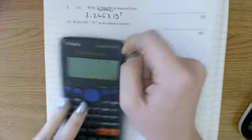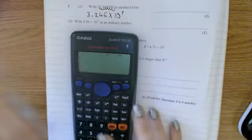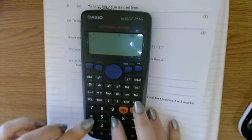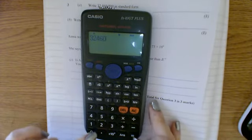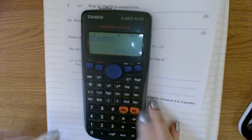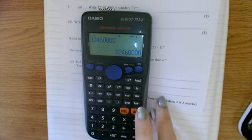As a quick check, type the original number into your calculator. 3, 2, 4, 6, 0, 0, 0, 0. And it gives it to us like that.